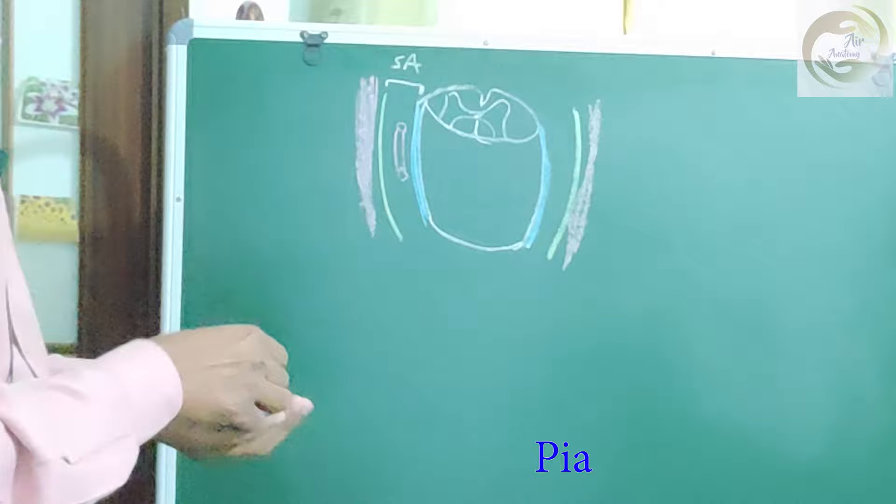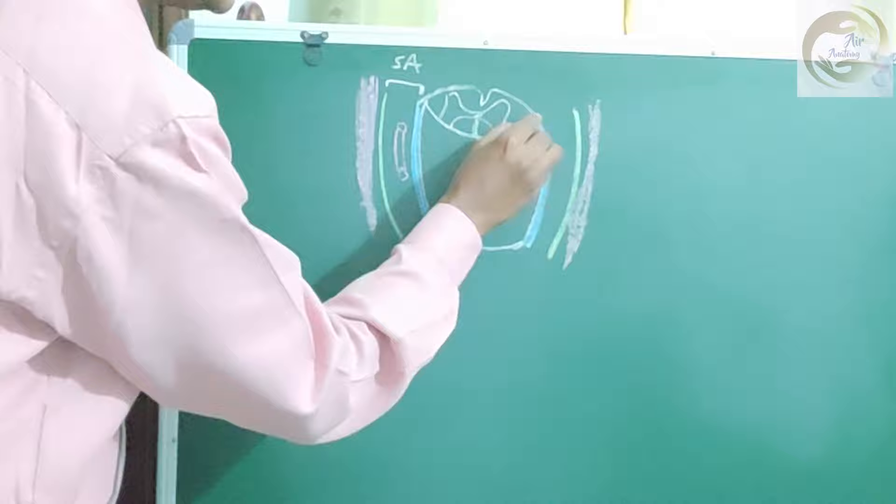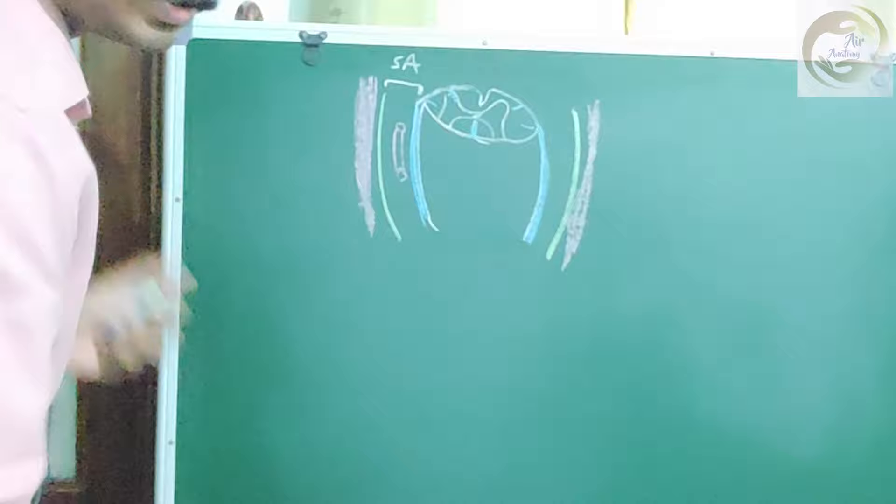Today we are going to learn about the pia modifications. The pia will send off septae into the nervous tissue. For example, the posterior median septum — septations that are within the spinal cord — are all pia modifications.